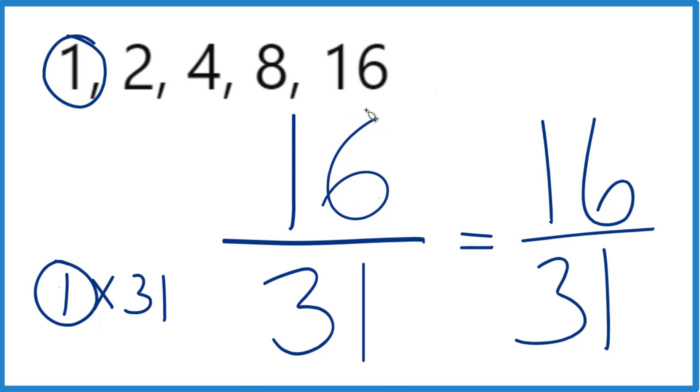And what that means is that 16/31 is already simplified. We can't reduce it down any further.